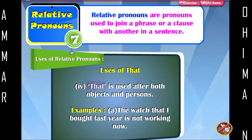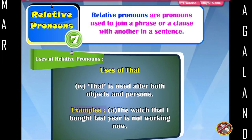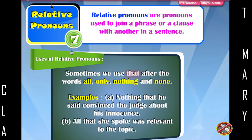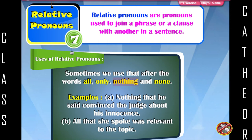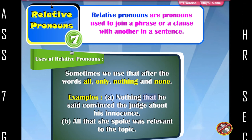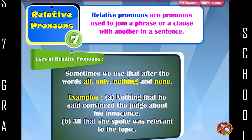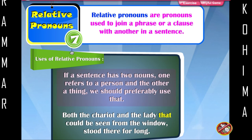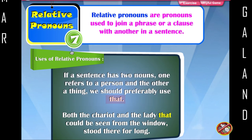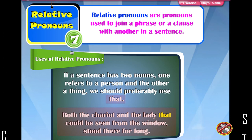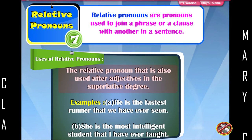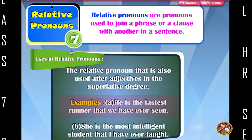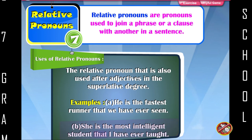Uses of that: that is used after both objects and persons. Example: The watch that I bought last year is not working now. Sometimes we use that after the words all, only, nothing, and none. If a sentence has two nouns — one referring to a person and the other a thing — we should preferably use that. Example: Both the chariot and the lady that could be seen from the window stood there for long. That is also used after adjectives in the superlative degree. Examples: He is the fastest runner that we have ever seen. She is the most intelligent student that I have ever taught.